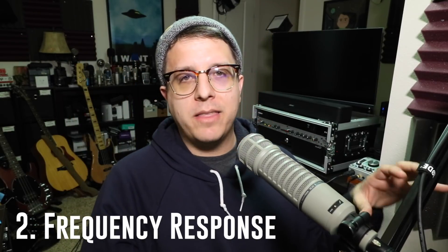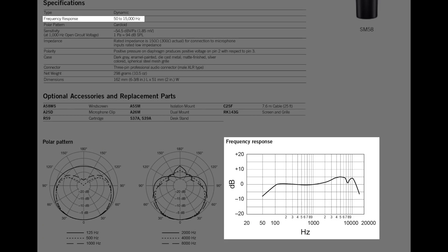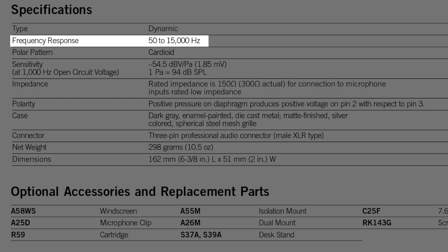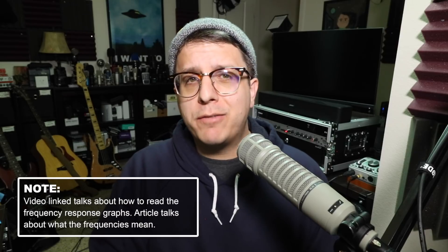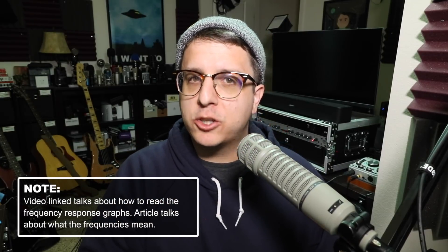Number 2: the frequency response. This spec will show up in two different areas on your spec sheet. The first one is just a number, and this gives you a very top-level idea of what frequencies the microphone will pick up, but it doesn't really show you the tone of the microphone. The graphic, on the other hand, gives you a much better understanding of the tone of the microphone. I'll also link a great article from Neumann in the description where they discuss different frequency ranges, the applications of those ranges, and what you're going to get out of them.